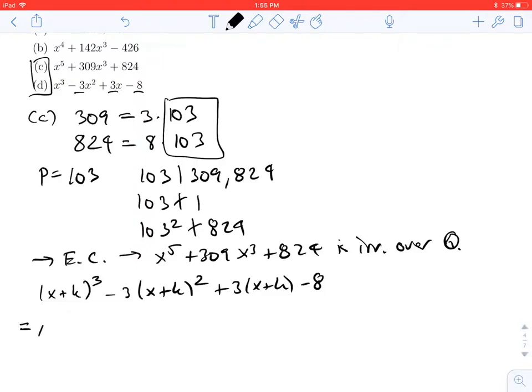Expanding (x+k)^3 - 3(x+k)^2 + 3(x+k) - 8, I get x^3. For the x^2 terms: the first term gives 3kx^2, the second gives -3x^2, so in total (3k - 3)x^2.